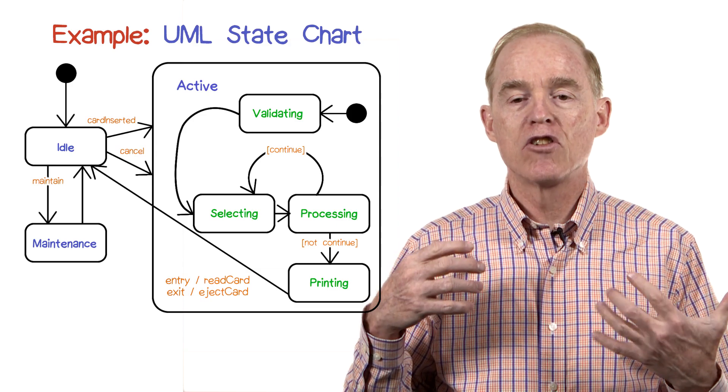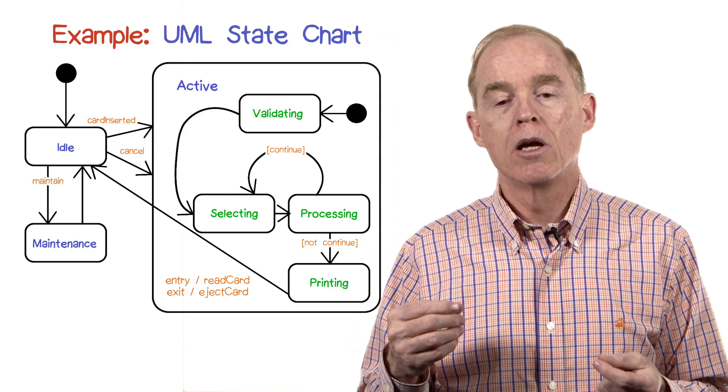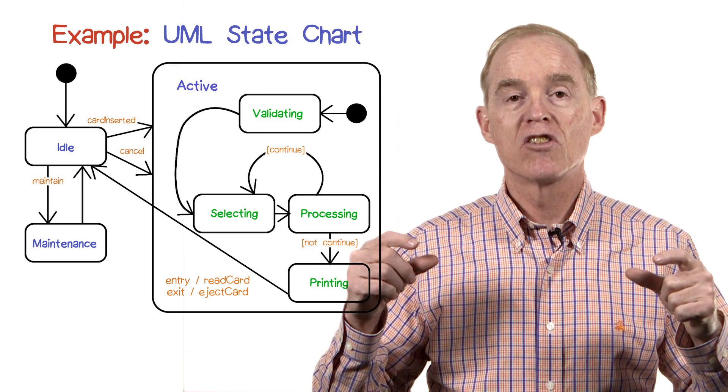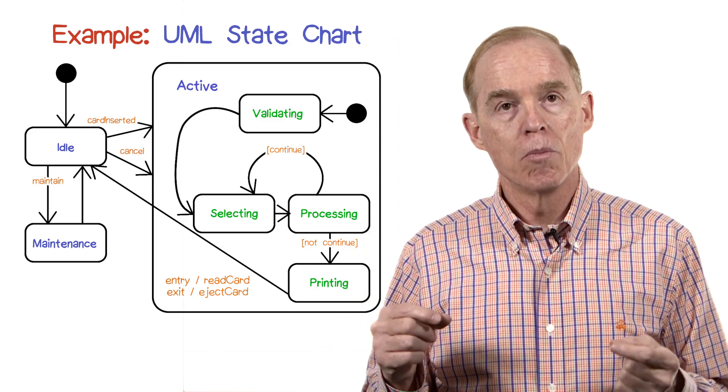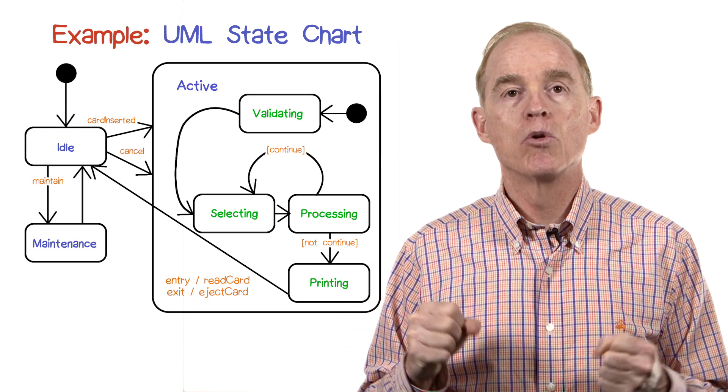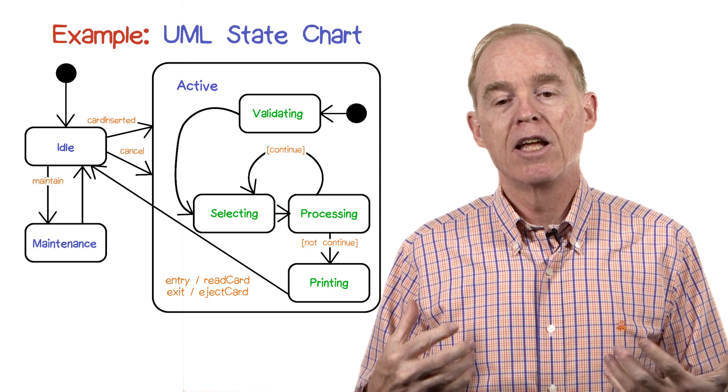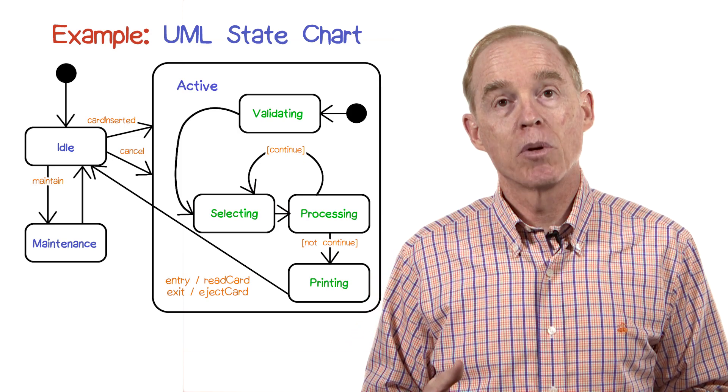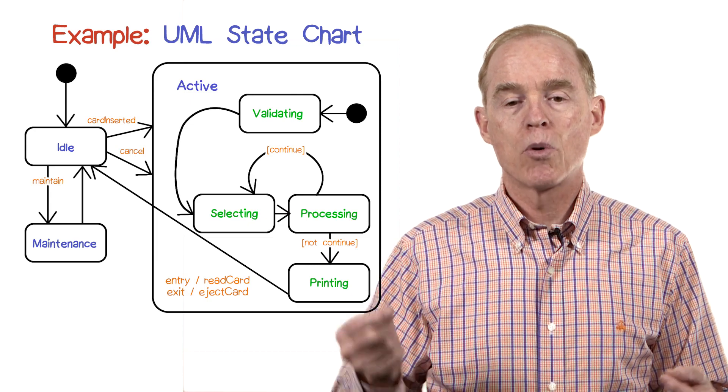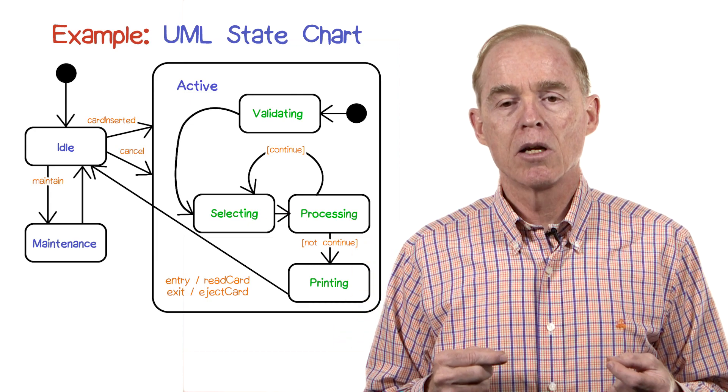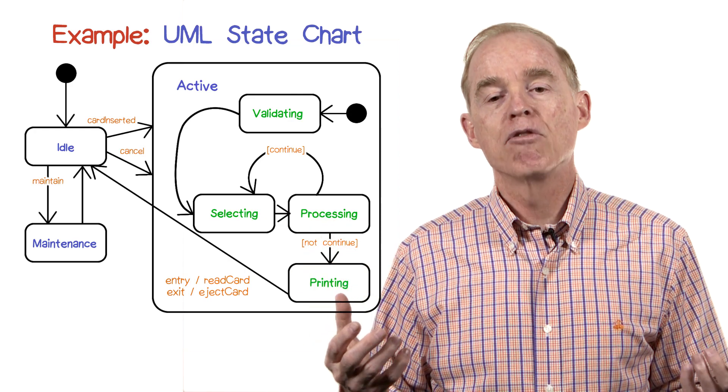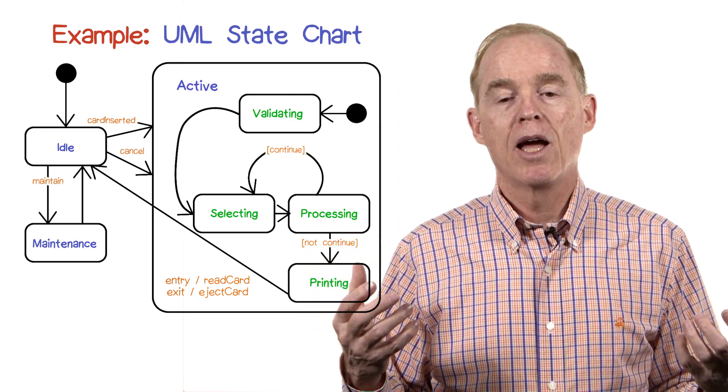In the transition between processing and printing on the right-hand side of the active state, there are square brackets, and inside it says 'not continue.' Continue is an attribute, presumably a Boolean attribute, and if it's false, then the transition can take place. Otherwise, it won't take place. Also, between processing and selecting, there's a transition labeled continue, which will take place if the continue attribute happens to be true.